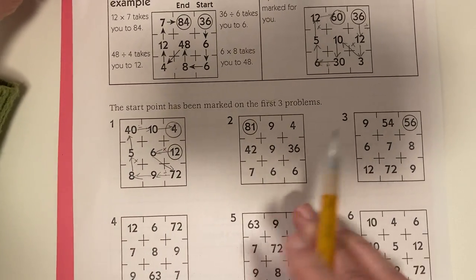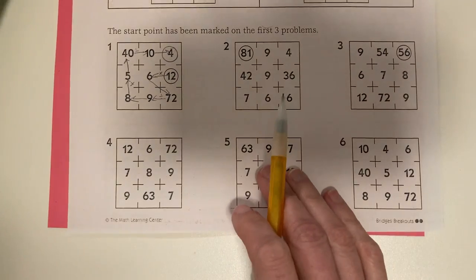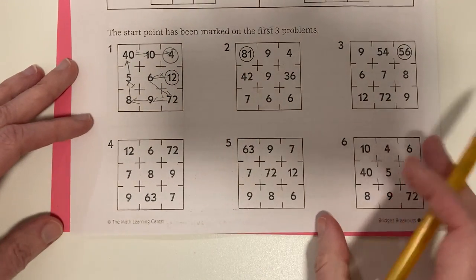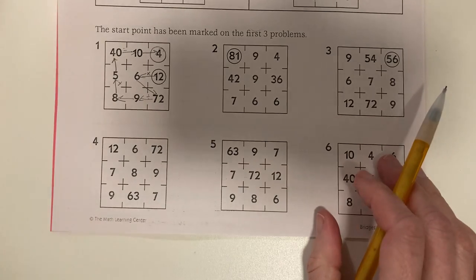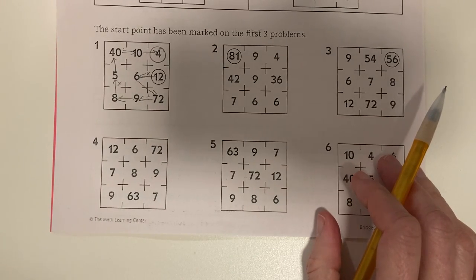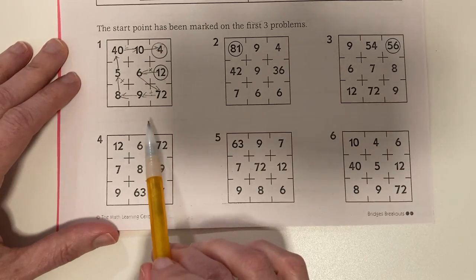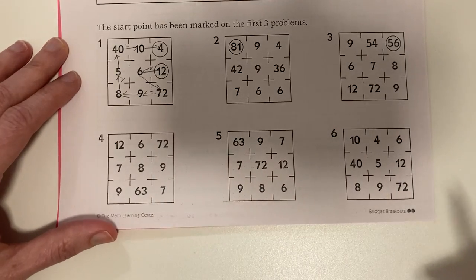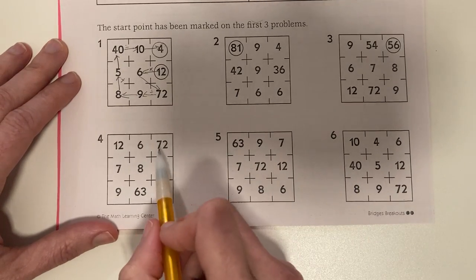You can try those two. This one is a little harder, because the start isn't marked for you. And there's actually two possibilities. There's two possibilities for these that aren't started for you, because the start is not determined.